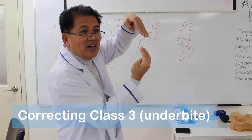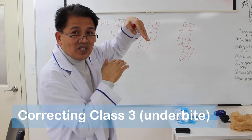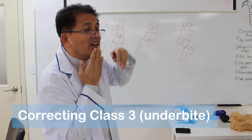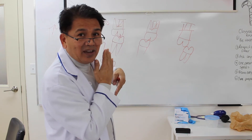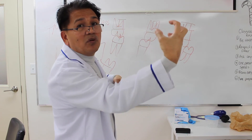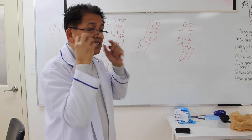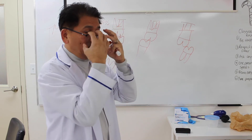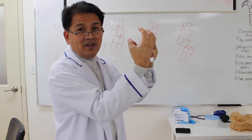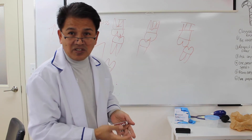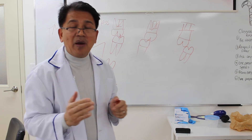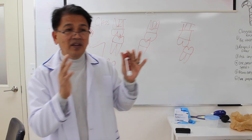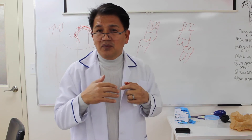On the other hand, if the lower jaw is in the right position and the maxilla is protruded, you bring the whole maxilla forward using a face mask — that is also an orthopedic correction. That's all Phase 2. Remember, you have to complete all of Phase 1 in order to get a full and stable result with Phase 2.